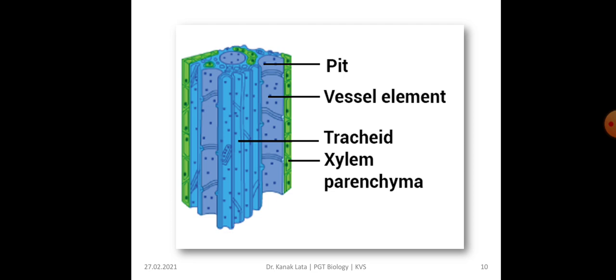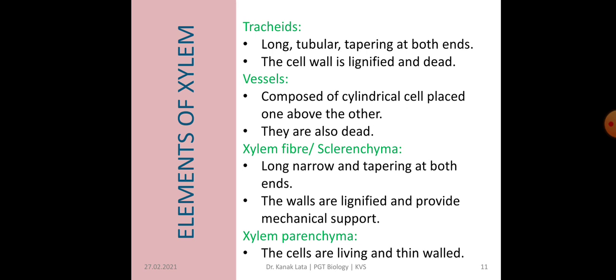Here is the figure of xylem showing pit, vessel elements, tracheids, and xylem parenchyma. Let us discuss the elements of xylem in detail. First is tracheids — they are long, tubular, and tapering at both ends, meaning pointed at both ends, and the cell wall is lignified and dead. Next is vessels, composed of cylindrical cells placed one above another, and they are also dead. Next is xylem fibre or xylem sclerenchyma — it is long, narrow, and tapering at both ends; the cell wall is lignified and they provide mechanical support.